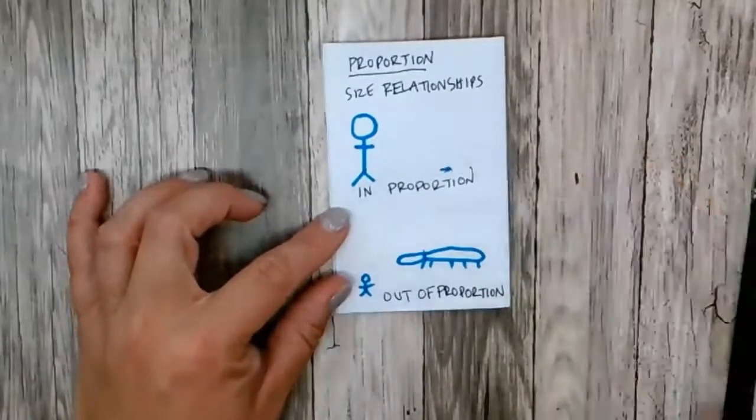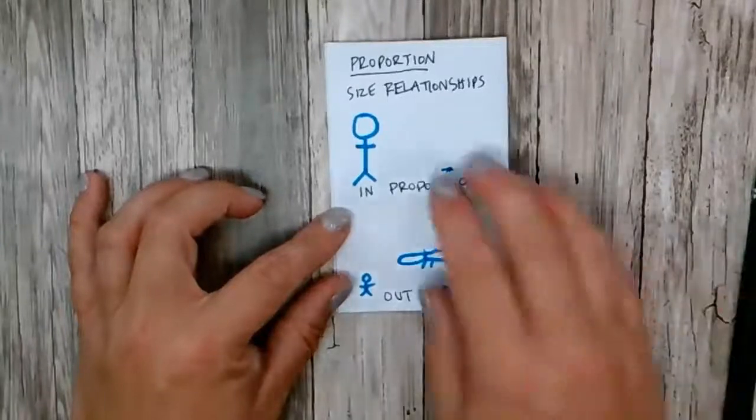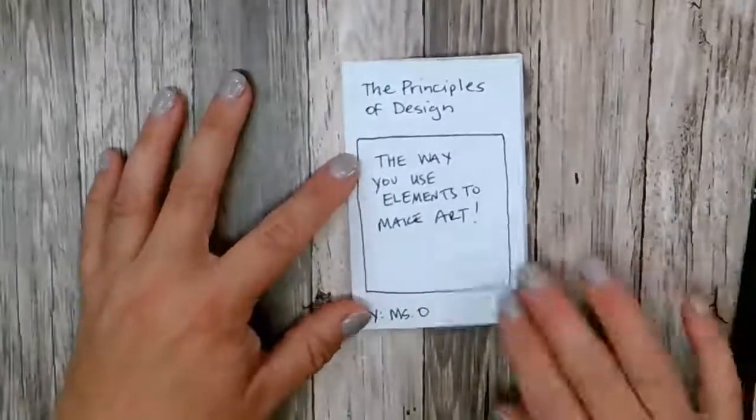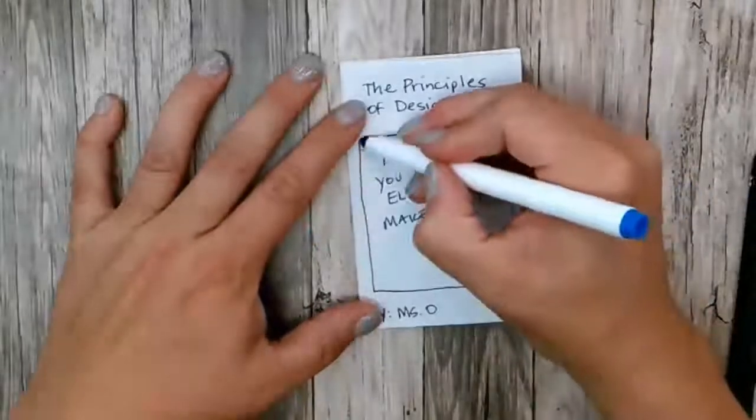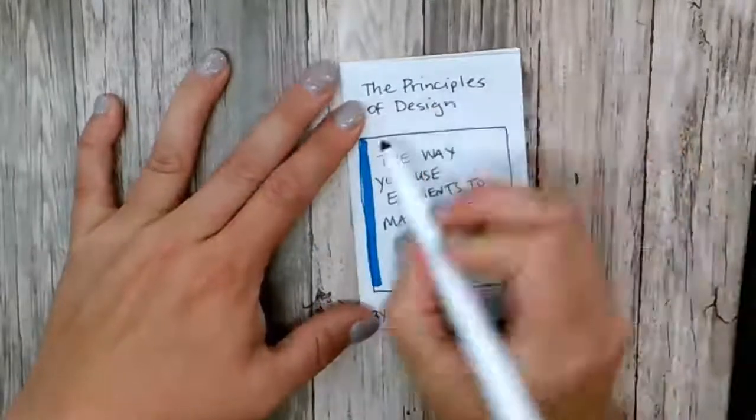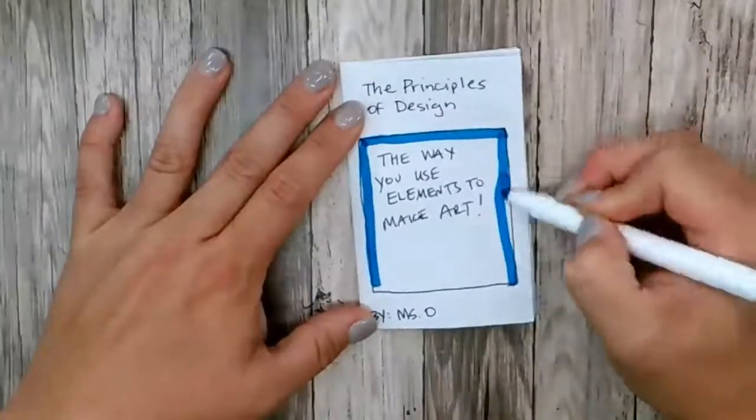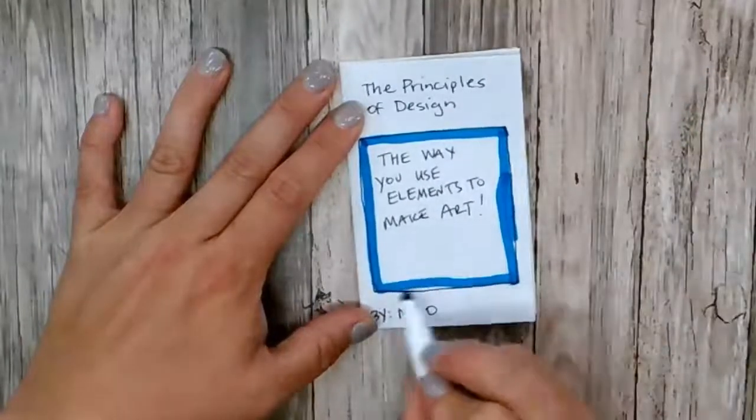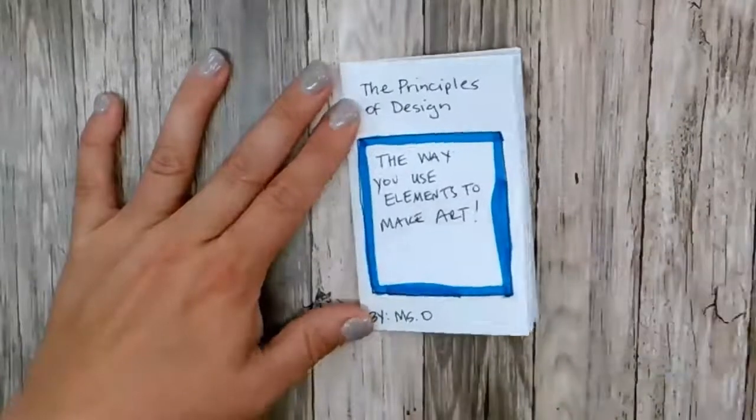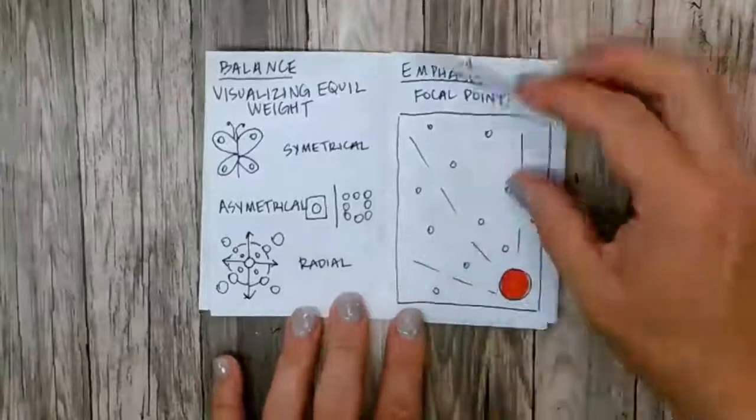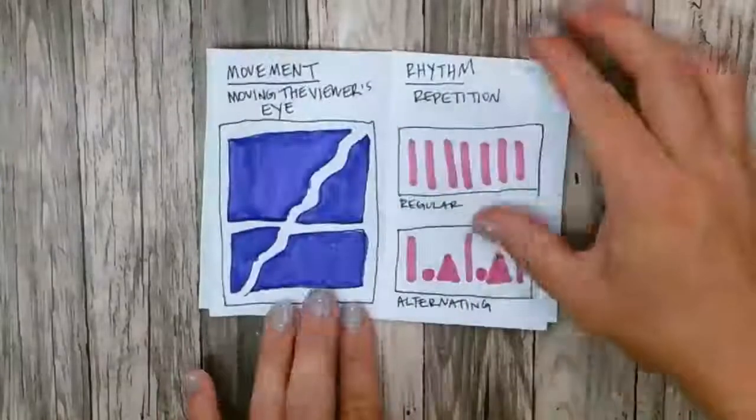Okay. So that is our zine. Our principles of design zine. If you want to make it fancier, you can add some color to the cover. You can color in some of the other areas, so long as your examples stay the same.